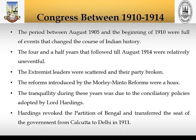The period between August 1905 and the beginning of 1910 was full of events that changed the course of Indian history. The four and a half years that followed, till August 1914, were relatively uneventful. The extremist leaders were scattered and their party broken. The reforms introduced by the Morley-Minto reforms were a hoax. Tranquility during these years was due to the conciliatory policies adopted by Lord Hardinge, who revoked the partition of Bengal and transferred the seat of government from Calcutta to Delhi in 1911.